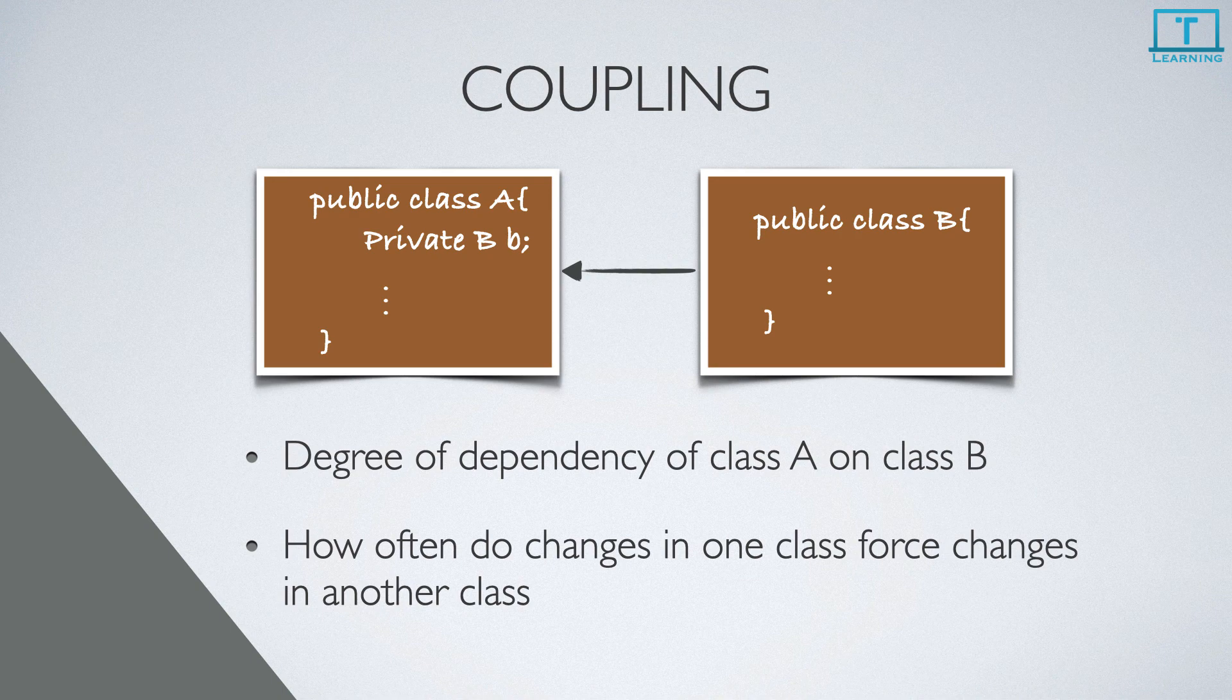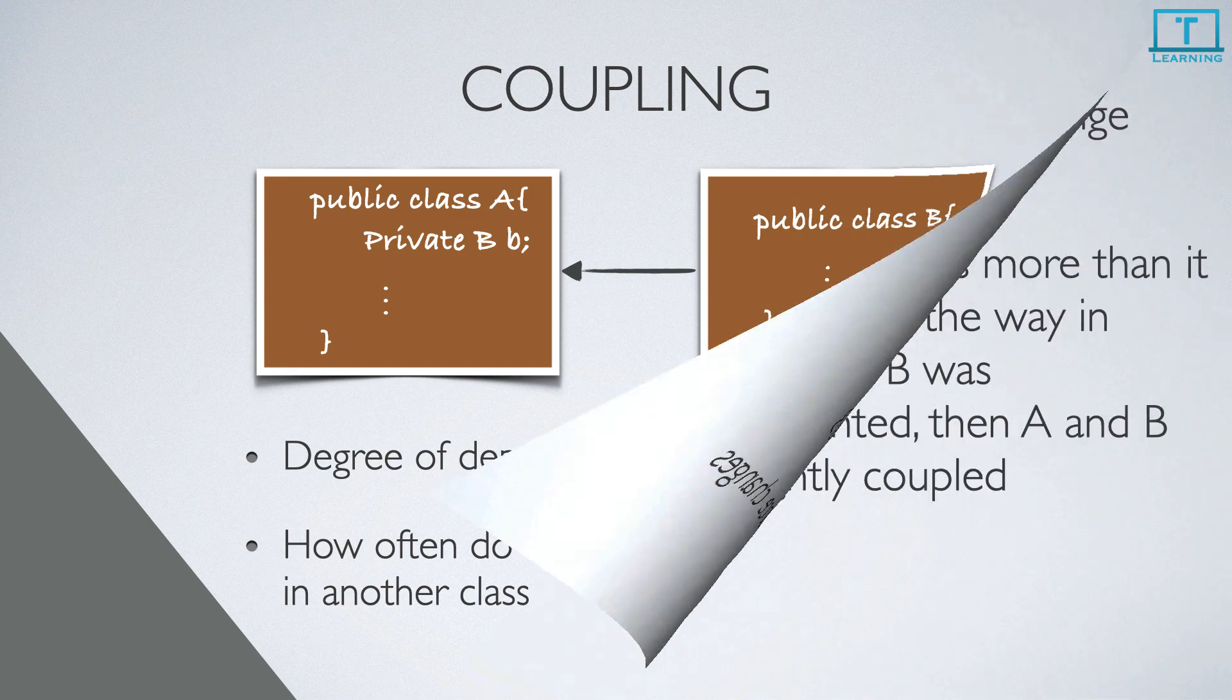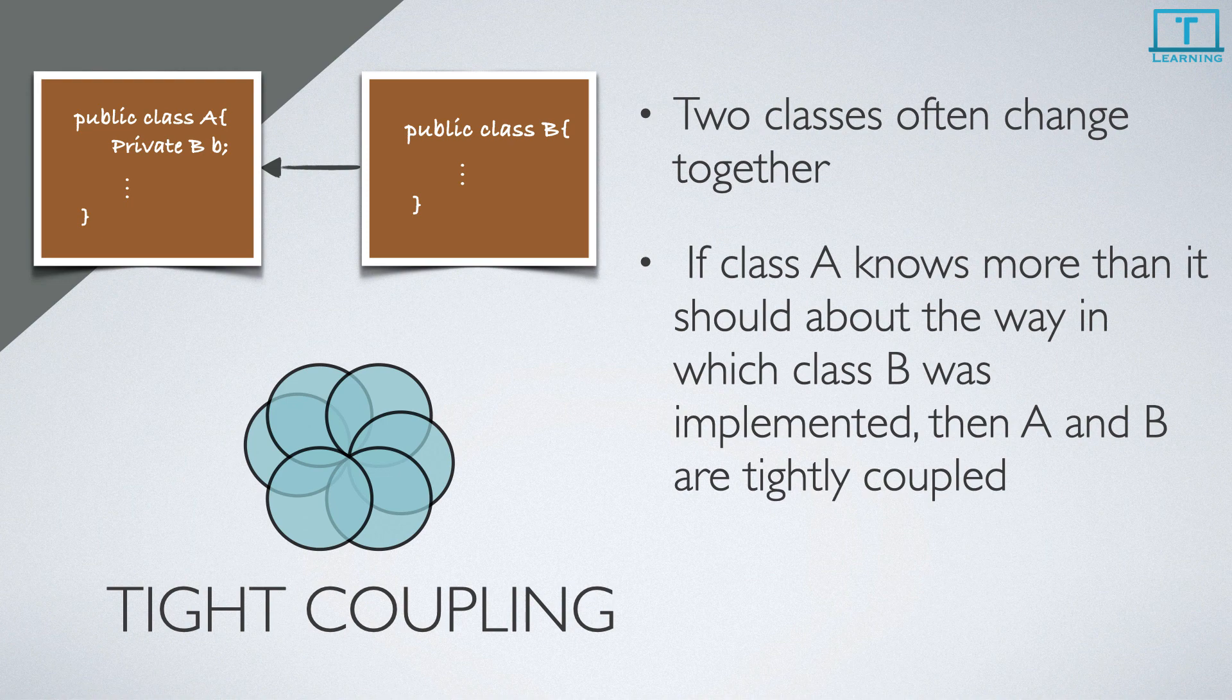Coupling is the degree of dependency of class A on class B, or how often changes in class B force changes in class A. Now let's see what tight coupling is. Both classes often change together if they are tightly coupled.